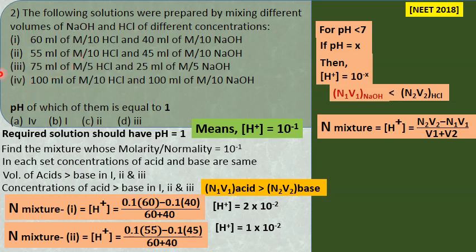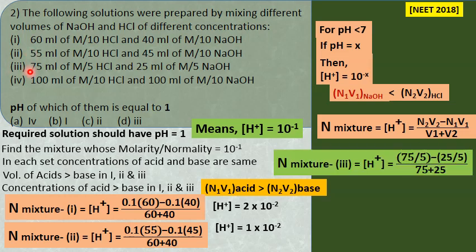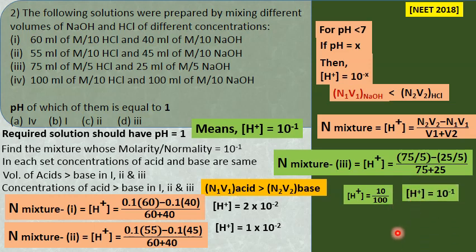Combinations 1 and 2 are ruled out, and combination 4 gives neutral solution. The possible answer is combination 3. Verification: (75 × 1/5 minus 25 × 1/5) divided by 100 = (15 minus 5) / 100 = 10/100 = 10⁻¹. H⁺ ion equals 10⁻¹, confirming answer is option 3, which corresponds to answer D.